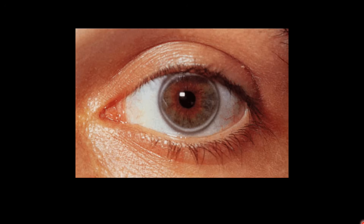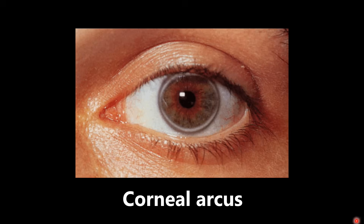This is an example of corneal arcus. We can see this change in color around the arc of the cornea, which represents lipid deposits in the cornea due to hypercholesterolemia. This is very common in the elderly, and when seen in that population it is called arcus senilis. Just know this association — a whitish ring around the cornea, corneal arcus, associated with hypercholesterolemia.